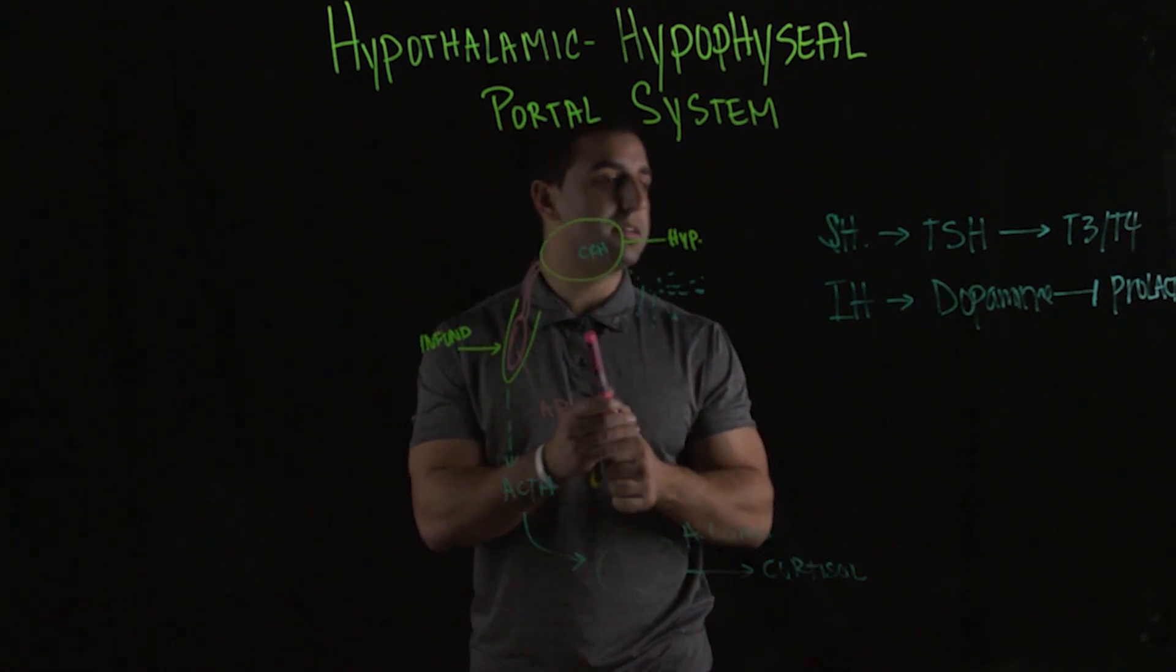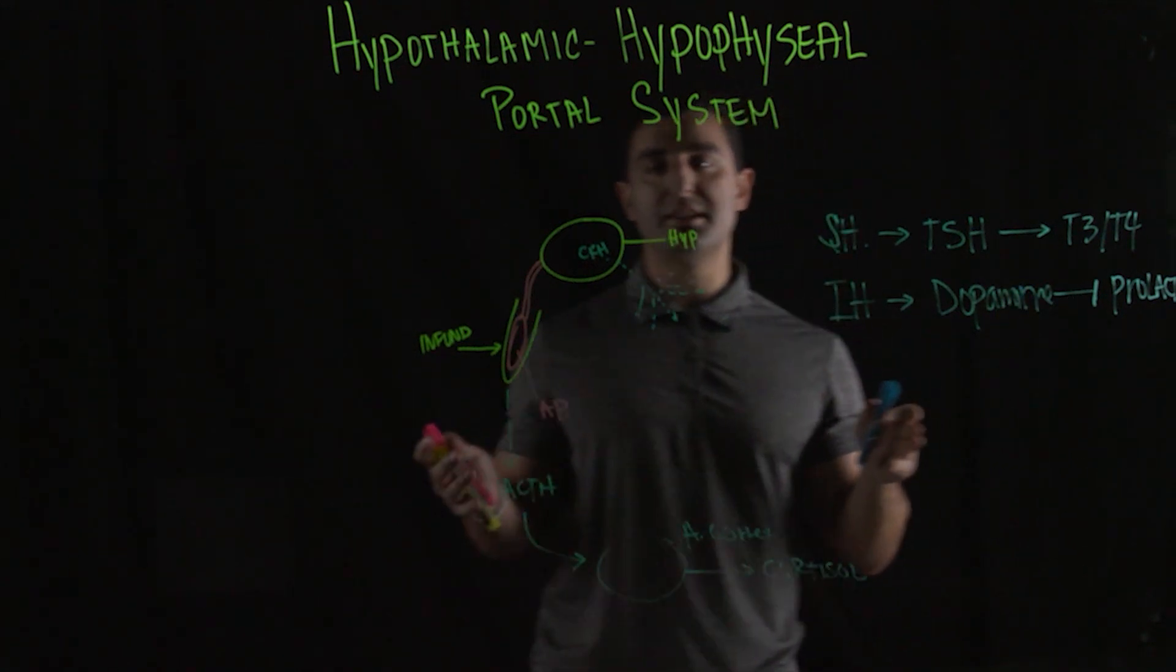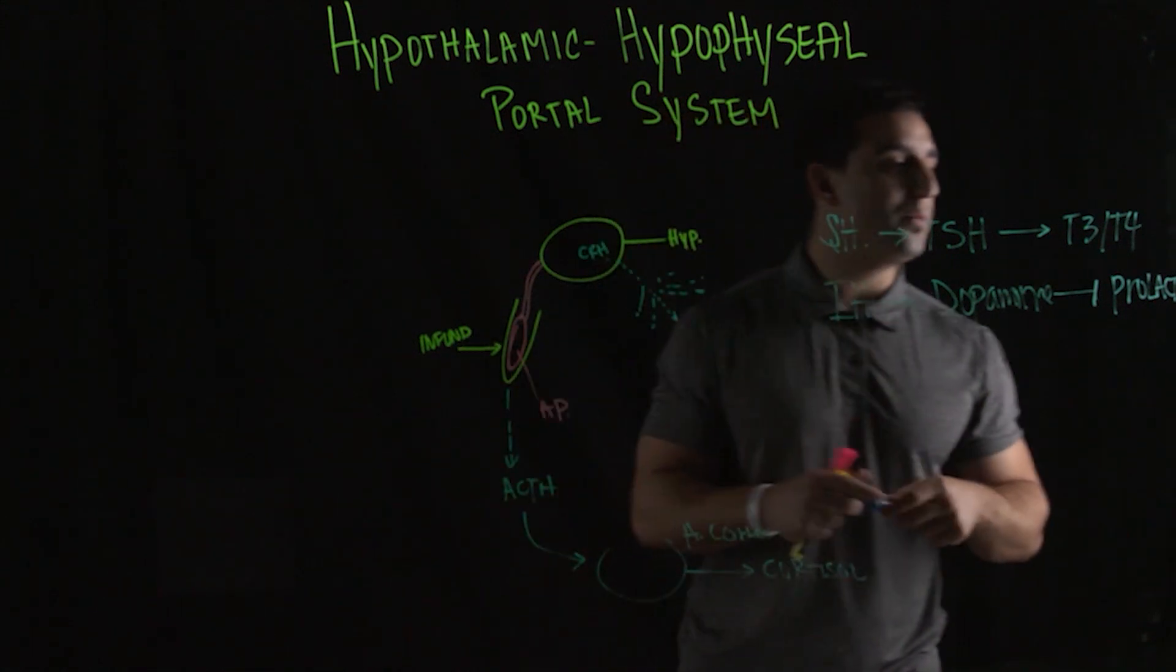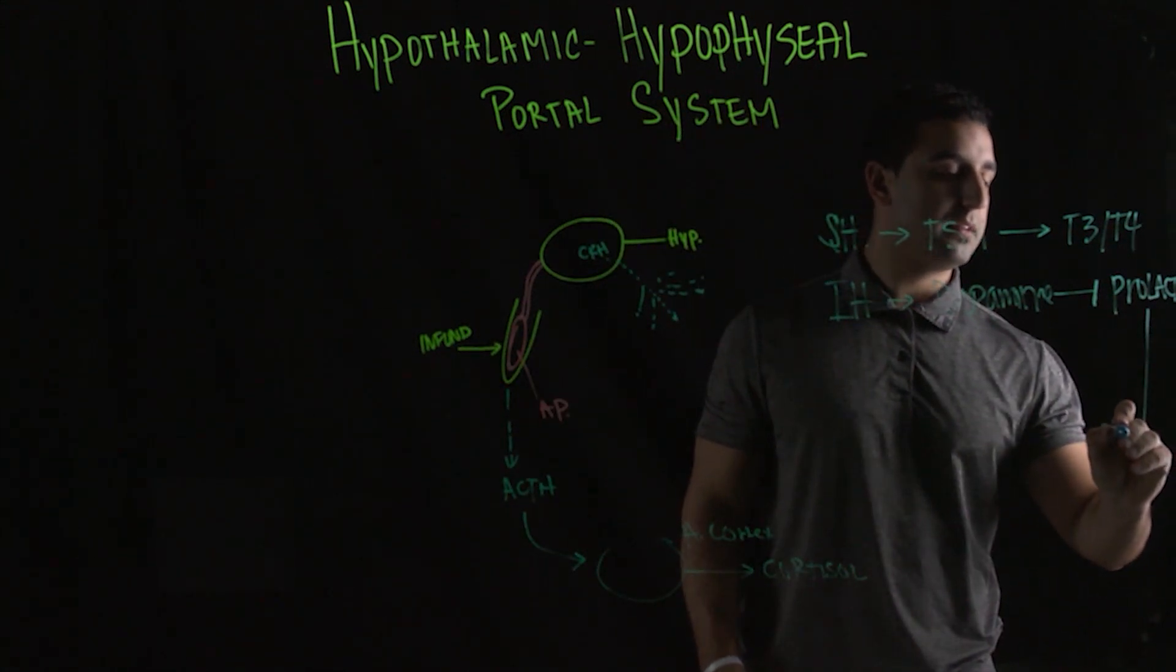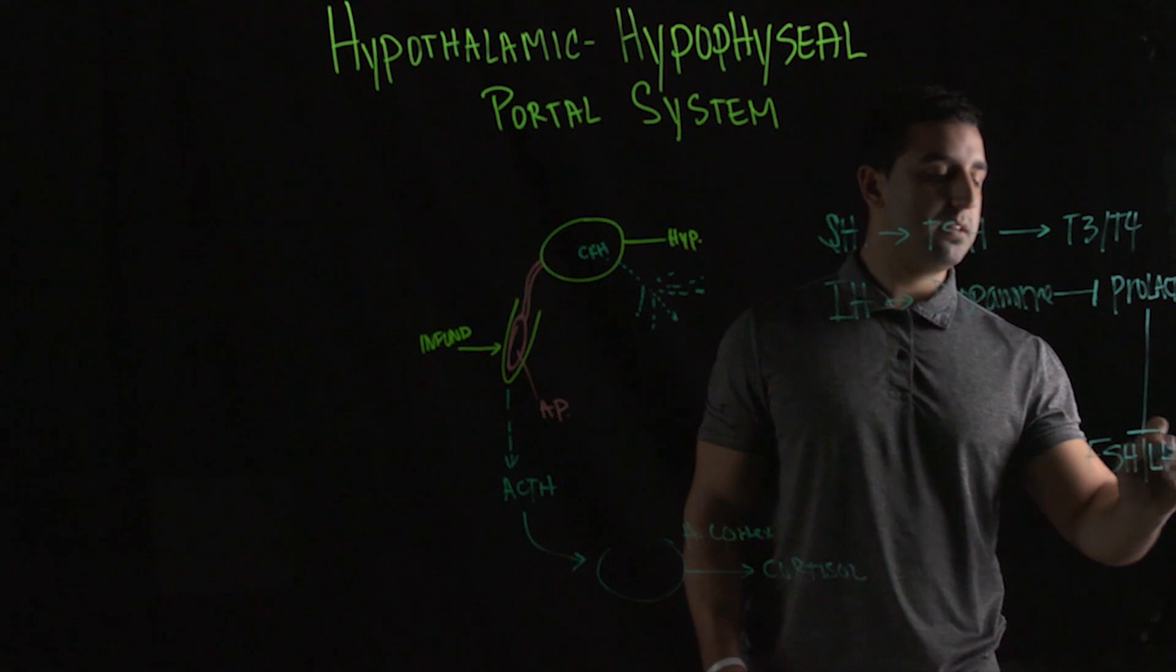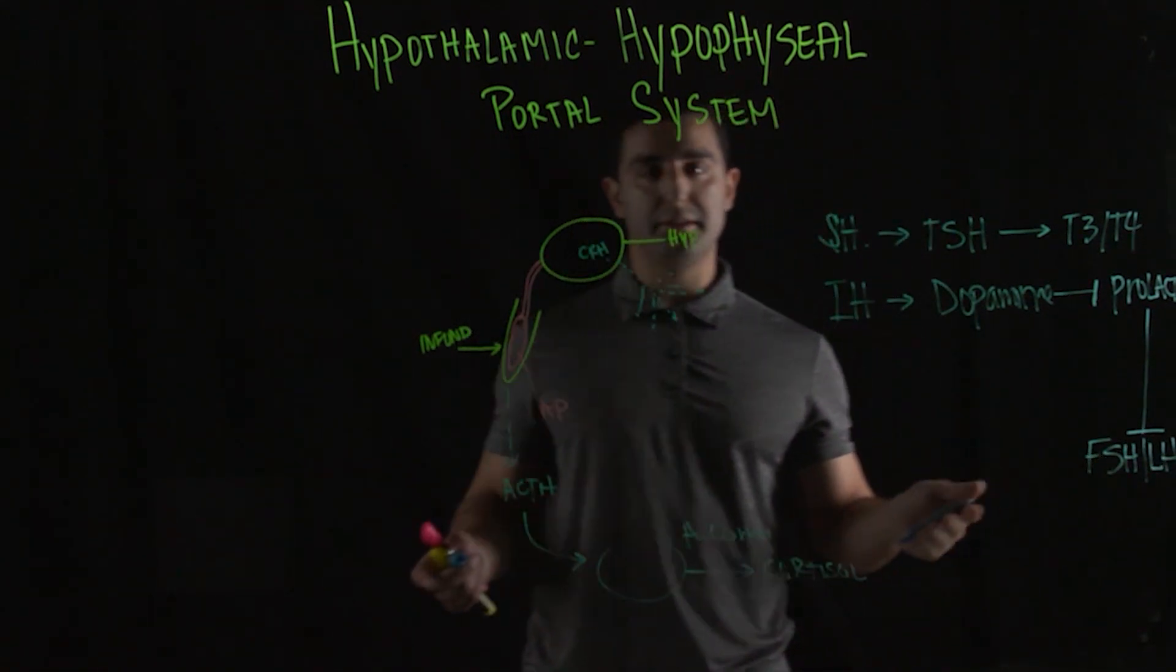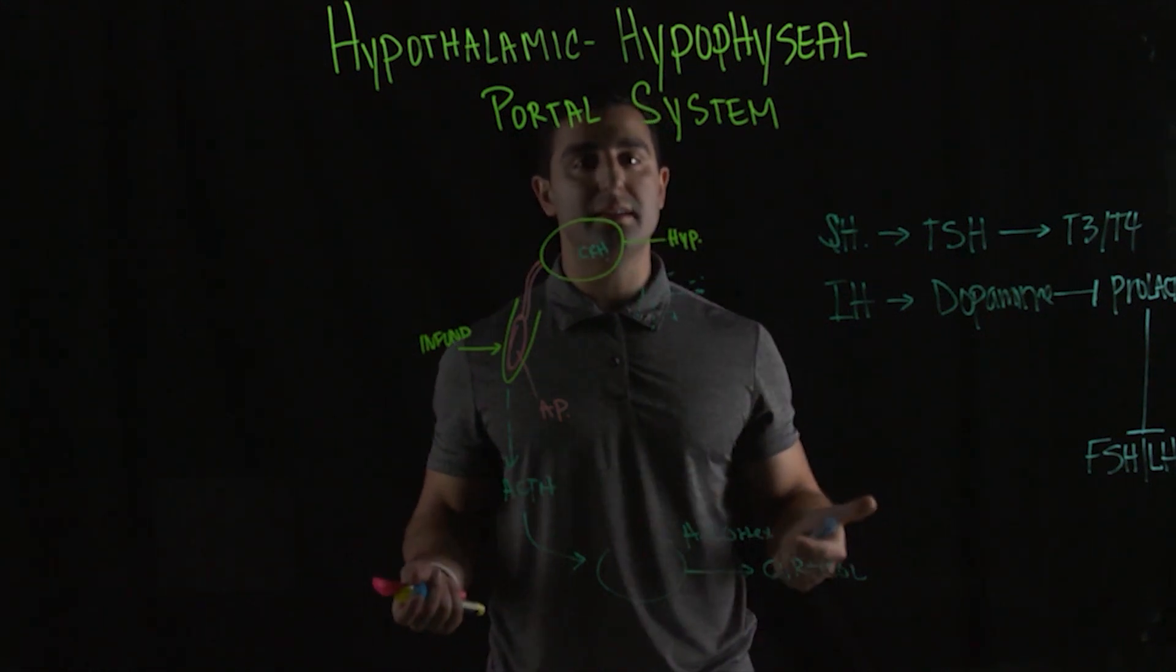So a great example of this for treatment is patients that, for example, have any kind of pituitary tumor, whether it's involving the prolactin. Prolactin itself is an inhibitor of the FSH and LH hormones. These hormones are responsible for fertility, fertility and hormones for secondary sex characteristics like testosterone.